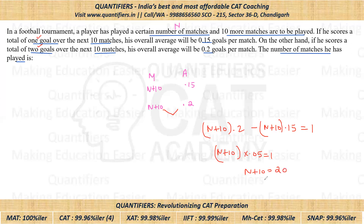We have to find the value of N. So N = 10 is the correct answer. It looks tough, but it was not tough at all. I hope this is clear to everyone. Thank you everyone.